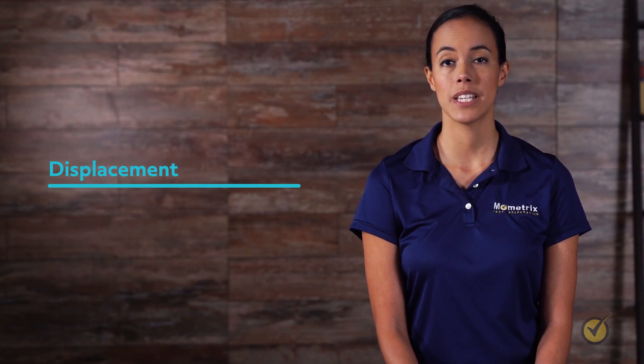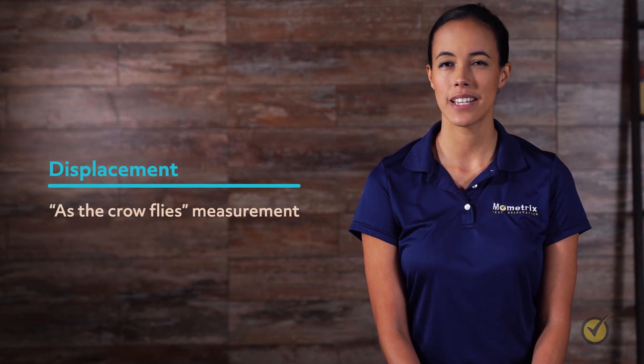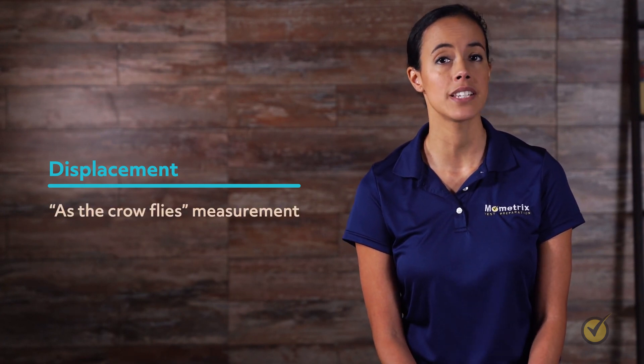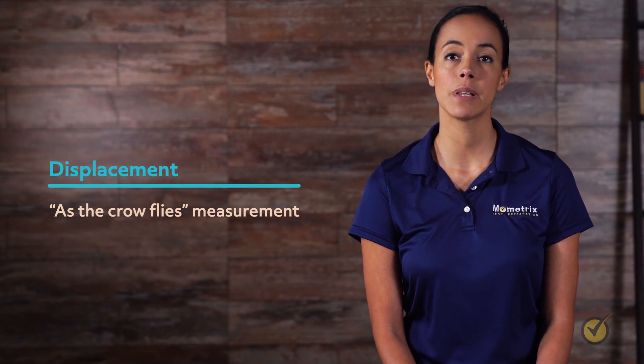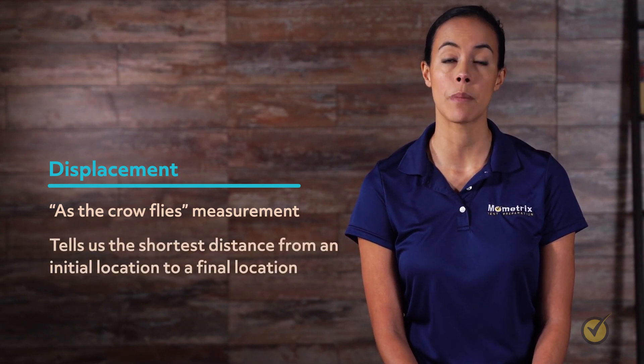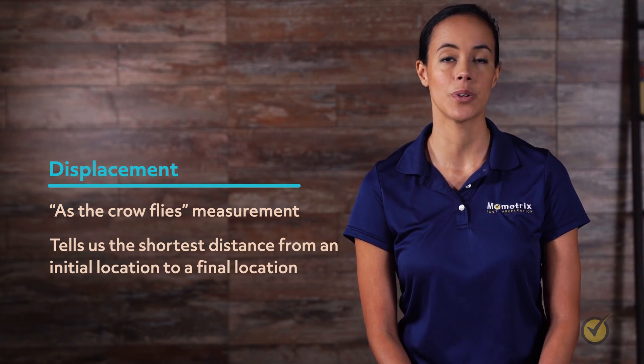Sometimes we call displacement an as the crow flies measurement, meaning a crow flies directly from one place to another using the shortest path possible. Similarly, displacement tells us the shortest distance from an initial location to a final location.